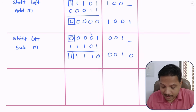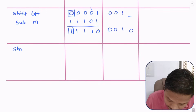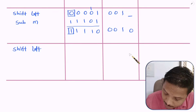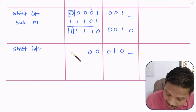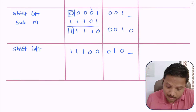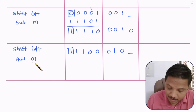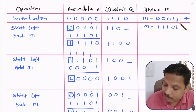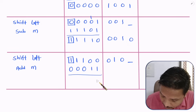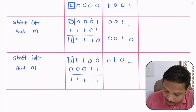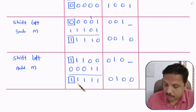Step 4 - the last step: Perform shift left operation. The first bit is blank, and shifting gives sign bit = 1. Since sign is 1, we perform add M = 00011. After the addition the sign bit is 1, so the blank quotient bit is set to 0. All four steps are now complete.